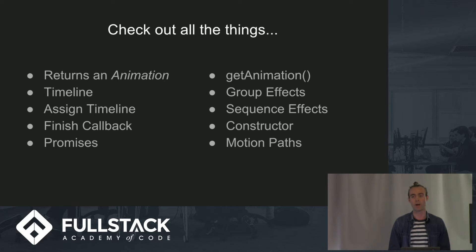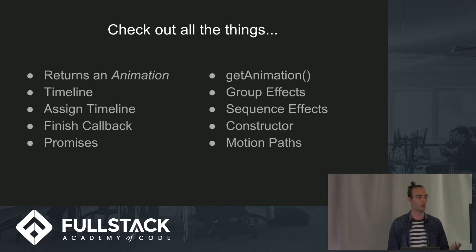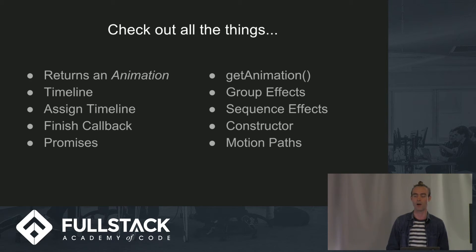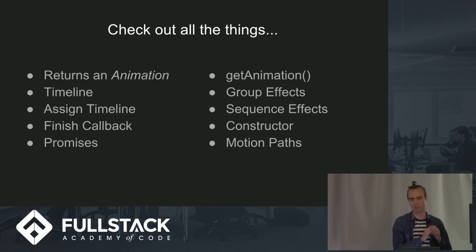We also get motion paths back, which is something we're losing with SVG SMIL being deprecated. You can group animations together. You can also select every single thing animating on your page with the simple getAnimations function, so you can access all animations with one function, or grab just a subset in other functions.